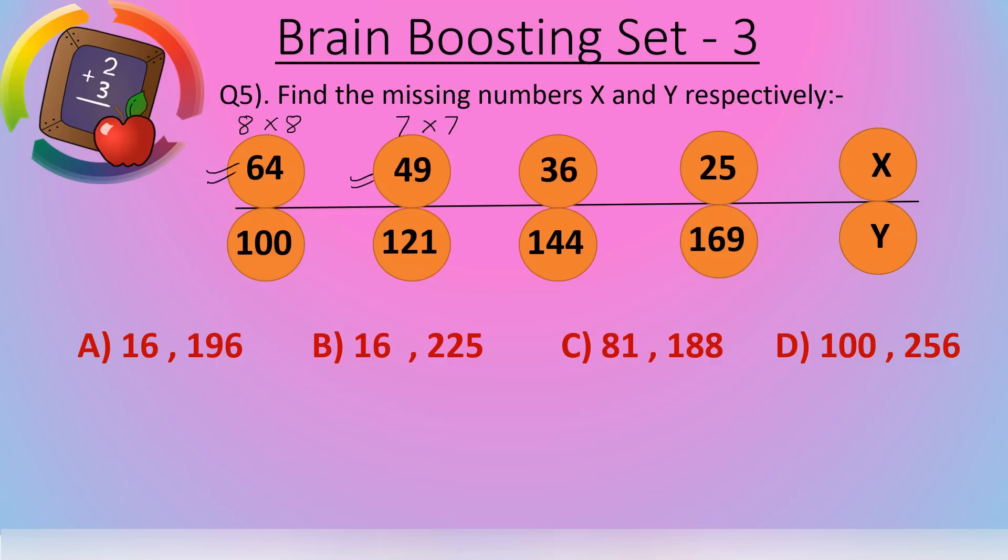Yes, 6 into 6 we get 36. And 25? Yes, 5 into 5 we get 25. So the pattern is first 8, after that 7, after that 6 and after that 5. Now what is the term present here? Yes, 4 into 4, it means 16.